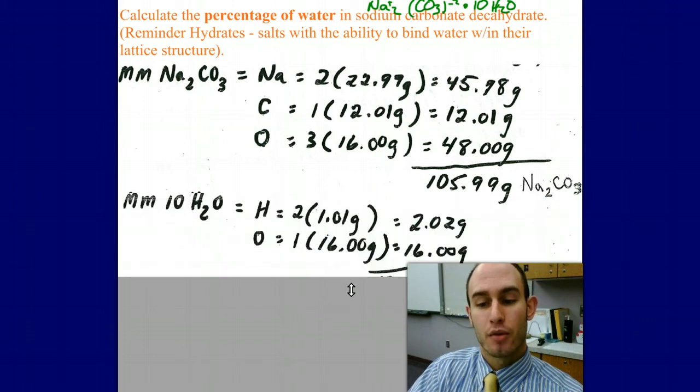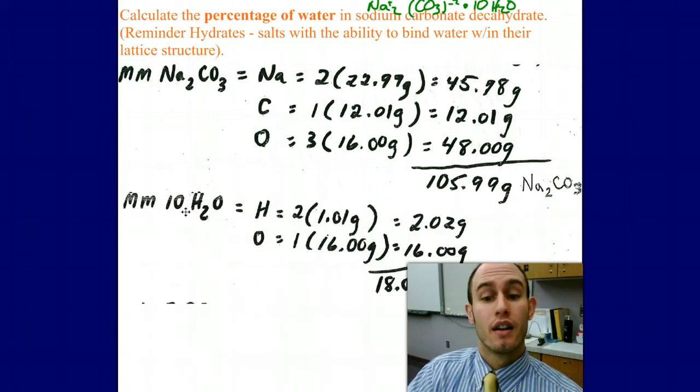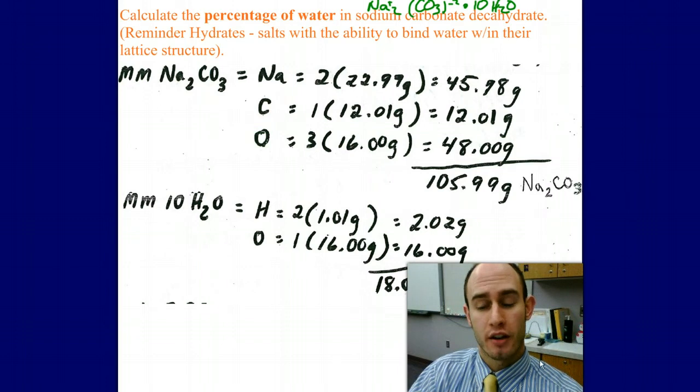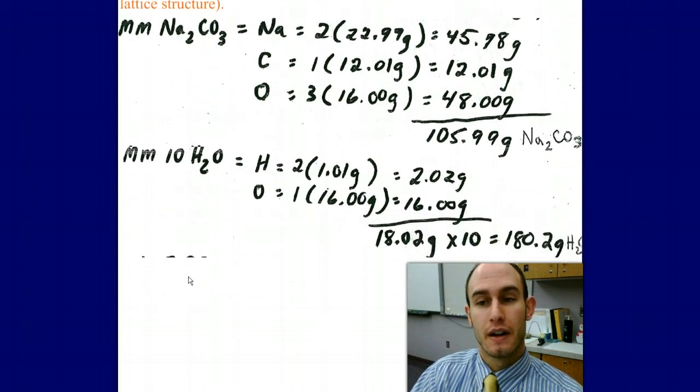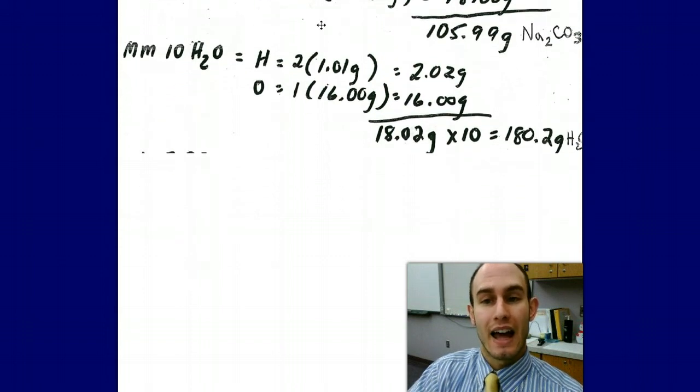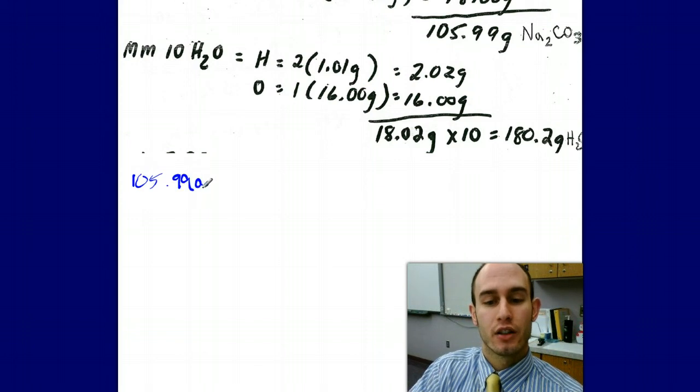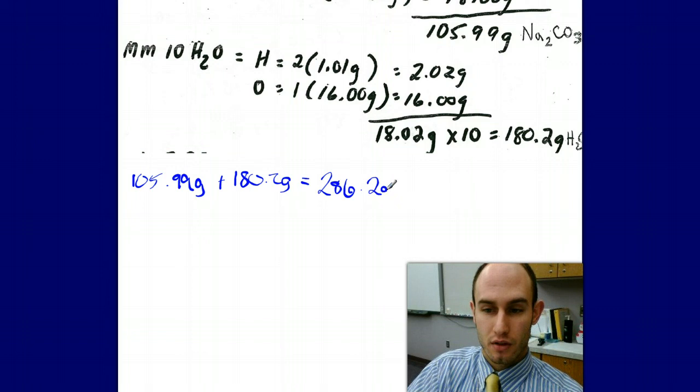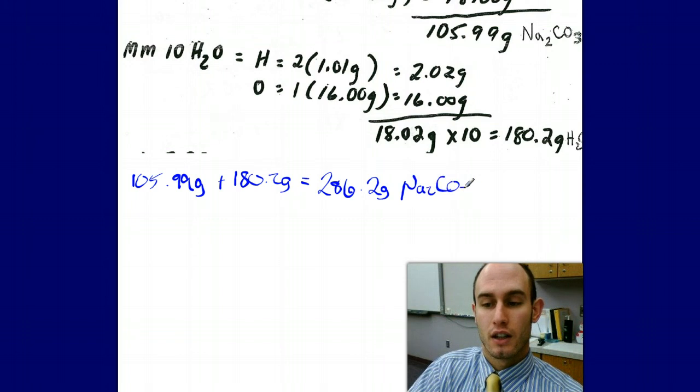I perform the exact same operation in getting the mass of my 10 waters, which is 18.02 times 10, to have a total mass of 180.2 grams. What I need to do now is take these two masses and add them together for my total mass of the compound. I'm going to add 105.99 grams plus 180.2 grams, and my total is 286.2 grams of sodium carbonate decahydrate with 10 waters.